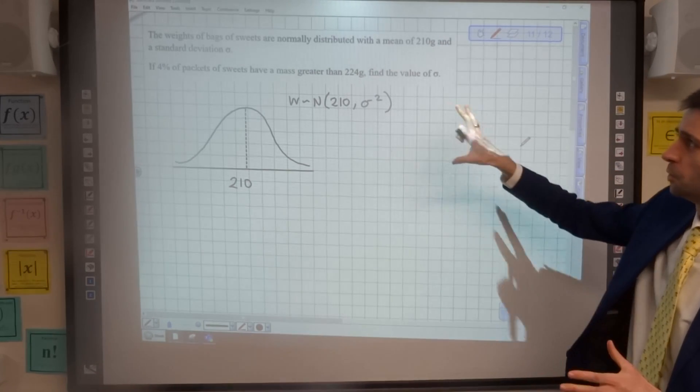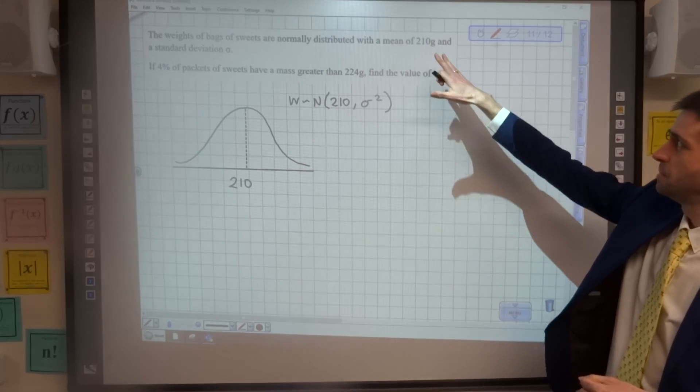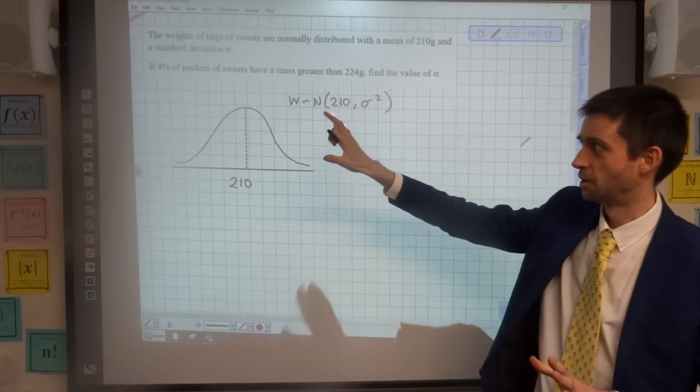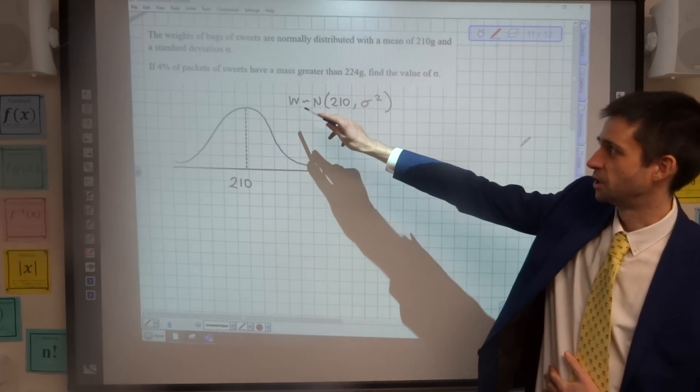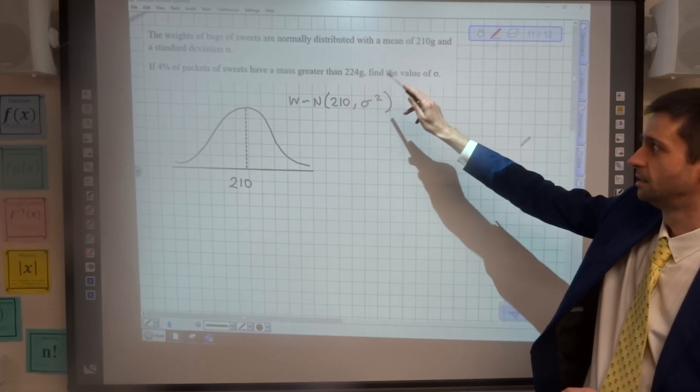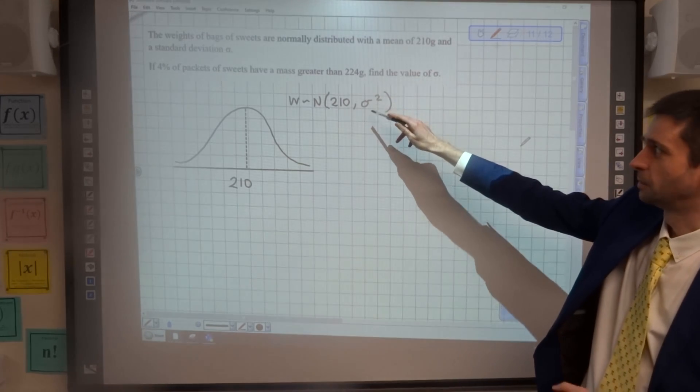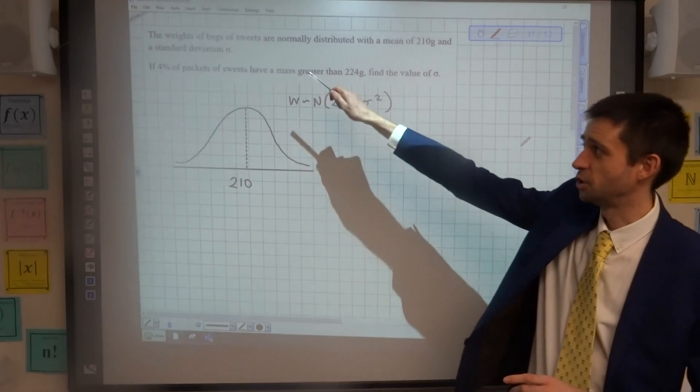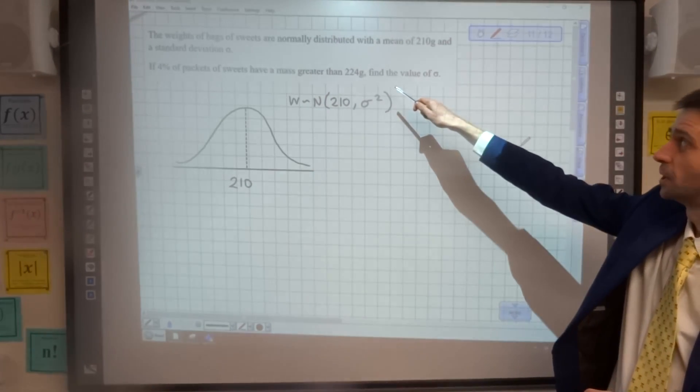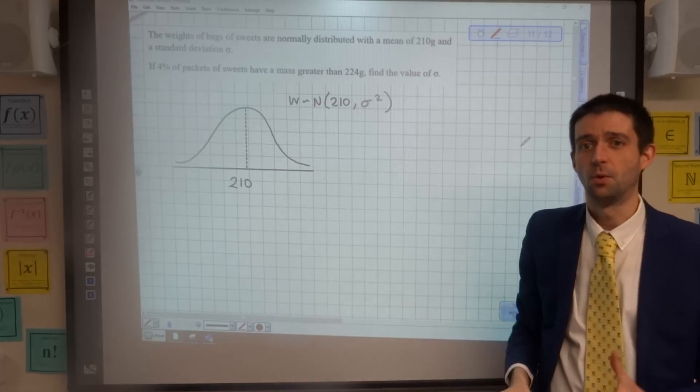The question here: the weights of bags of sweets are normally distributed with a mean of 210 and a standard deviation sigma, so unknown. I've written that W follows a normal distribution, mean 210, standard deviation sigma, so variance sigma squared. And the question says, if 4% of packets of sweets have a mass greater than 224 grams, find the value of sigma.